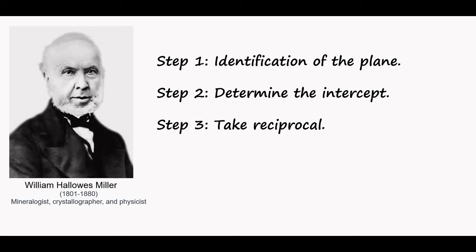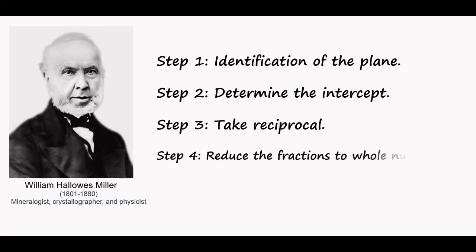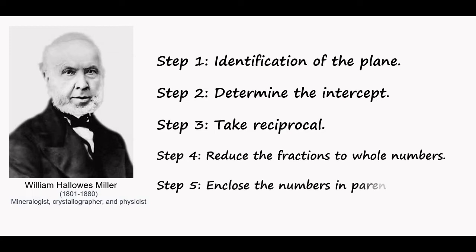In a case where any plane is passing through the origin, we can shift the origin to some other nearest lattice point. As we need Miller indices as whole numbers, if required, multiply each of the reciprocals with their least common multiple. Finally, enclose the numbers in parentheses without including commas. Thus, you get the Miller indices.